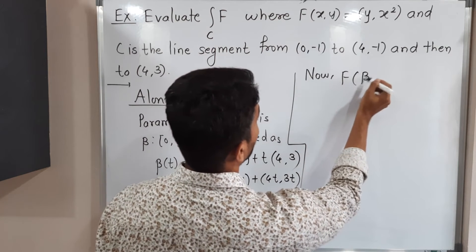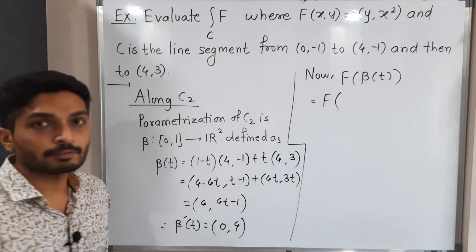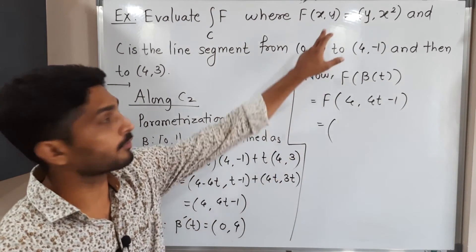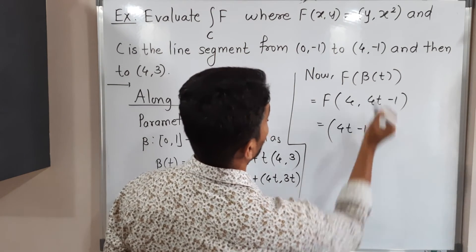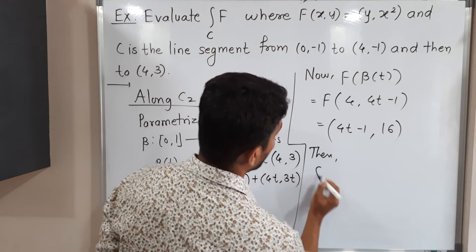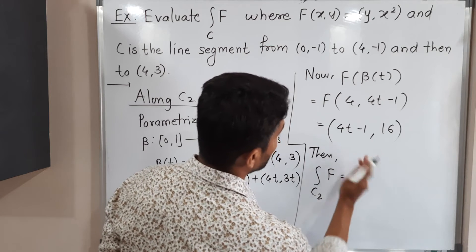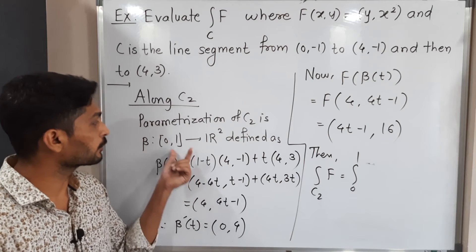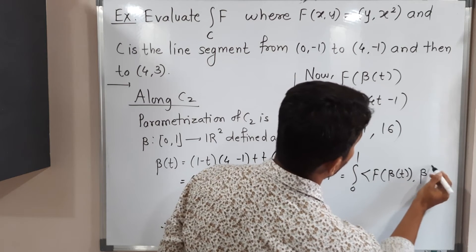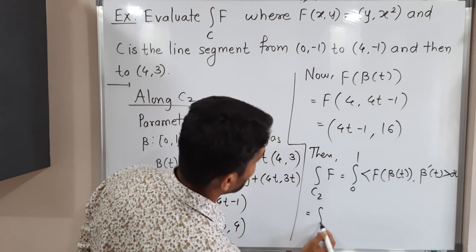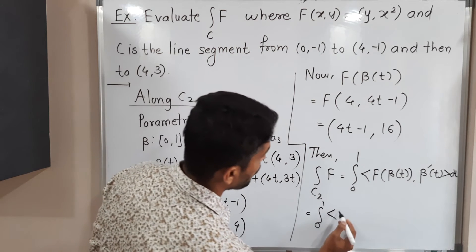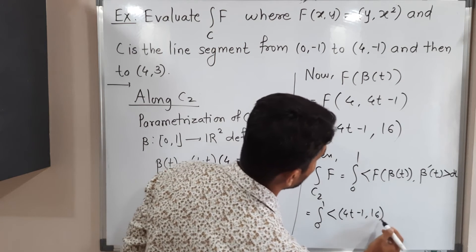Now we find f(beta(t)). Beta(t) = (4, 4t - 1), and using the definition of f, which is (y, x²): y = 4t - 1 and x² = 4² = 16. Therefore f(beta(t)) = (4t - 1, 16).